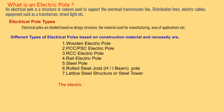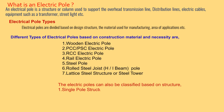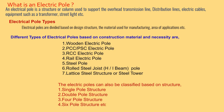Electric poles can also be classified based on structure: single pole structure, double pole structure, 4-pole structure, and 6-pole structure.